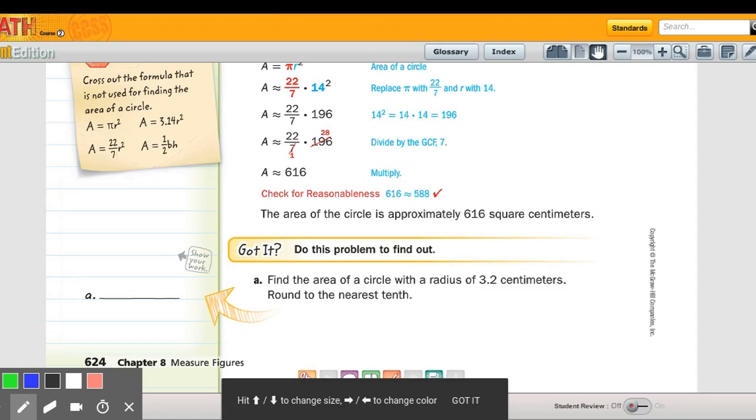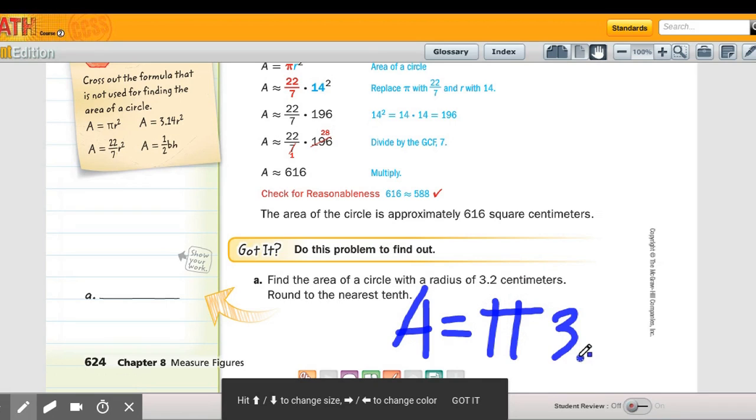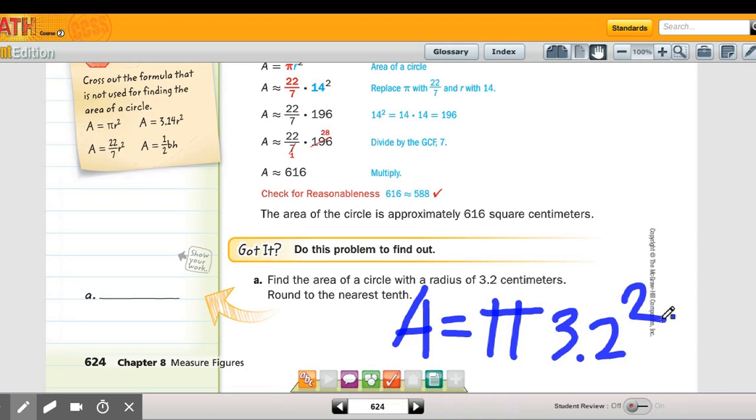For example, here's one. It says find the area of a circle with a radius of 3.2 centimeters. That means I'm going to need to do area equals pi times 3.2 squared. If I use my calculator and I do 3.2 squared, that's about 10.24, then I multiply that times the pi button and I get 32.17, and everything with area is squared so it'd be 32.17 centimeters squared.